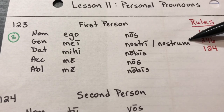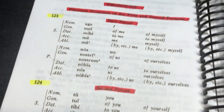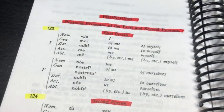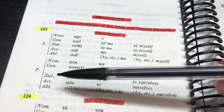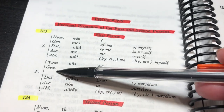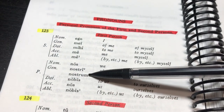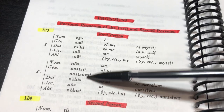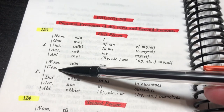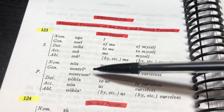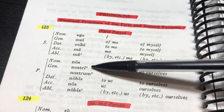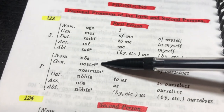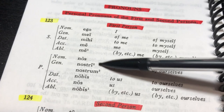Someone asked why there's a space in the grammar book between the forms. That's because nostrum and nostri go together with the genitive plural. It was a good question, so we looked at the little footnotes there.